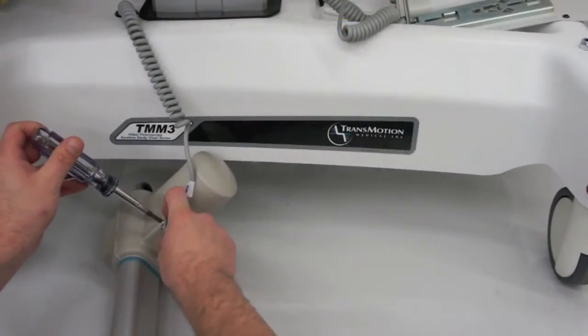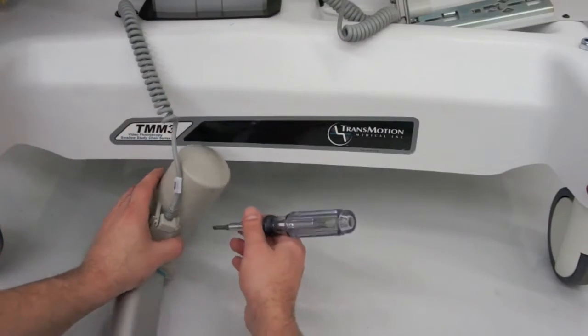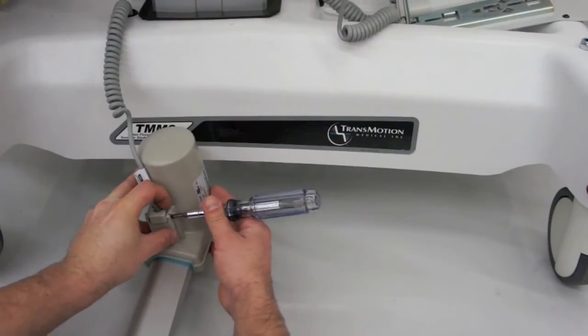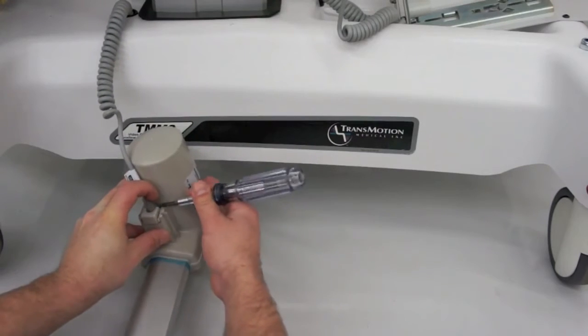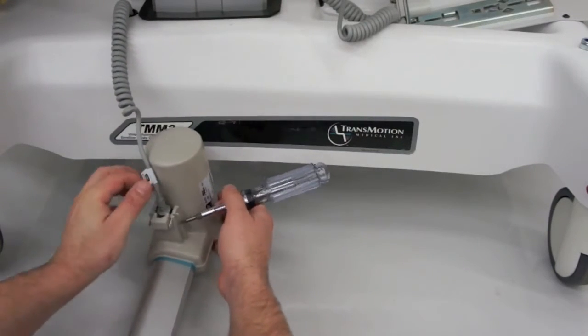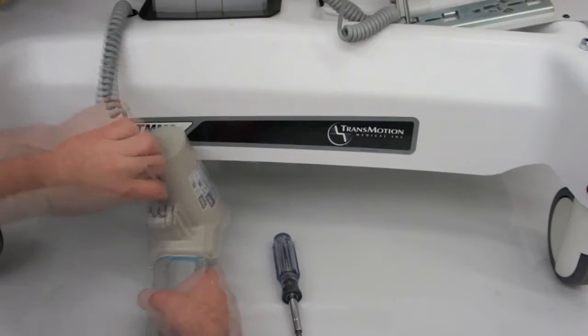With the actuator removed, take the flathead screwdriver and push the two locking points on the retaining clip. Push the retaining clip out with the screwdriver and pull on the cord closest to the plug.